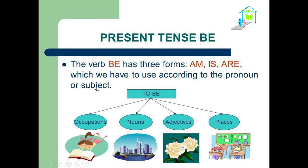The subjects here — I'm talking about I, you, he, she, it, we, you, and they. So we can use the verb to be according to those subject pronouns.